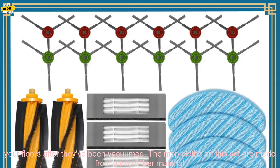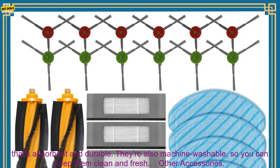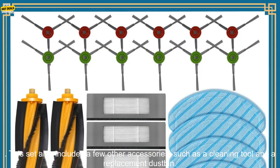Mop Cloths. The mop cloths are used to clean your floors after they've been vacuumed. The mop cloths on this set are made from a microfiber material that's absorbent and durable. They're also machine washable, so you can keep them clean and fresh.